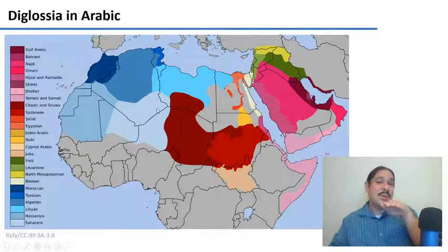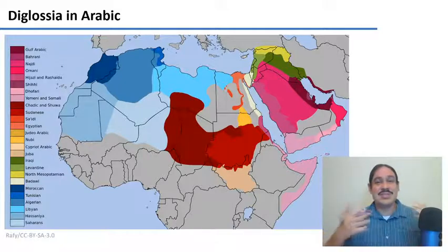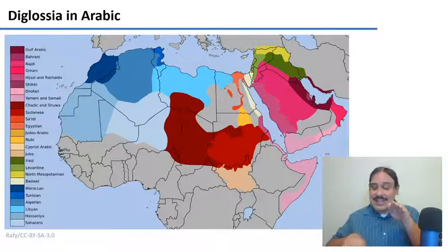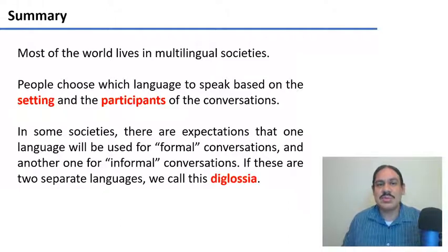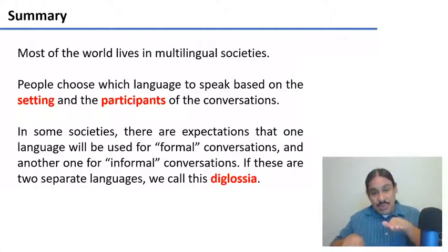In all these regions, the newspaper would be in one language — Modern Standard Arabic — and your conversation with friends would be in a different language, the local colloquial. It's as if, in Europe wherever they speak Romance languages, all the newspapers were in Latin and all the conversations were in French, Italian, and Spanish. This is how different these two are — this is diglossia. Most of the world lives in societies that use more than one language, and the choice of which language to use is usually based on the setting and the participants of the conversation. Societies with a more formalized separation — a language for formal settings and another for informal — exhibit diglossia, of which Arabic in the Middle East is the archetypical example.